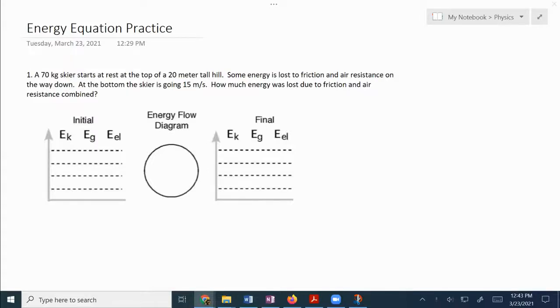All right, hi everybody. In this video, we're going to go over the answers to the energy equation practice. So to start stuff off, we got a 70 kilogram skier starts at rest on top of a 20 meter tall hill. Some energy is lost to friction and air resistance on the way down. At the bottom, the skier is going 15 meters per second. How much energy was lost due to friction and air resistance combined? So first thing, for each of these, you were supposed to draw a force or an energy diagram. So let's start things off by doing that.